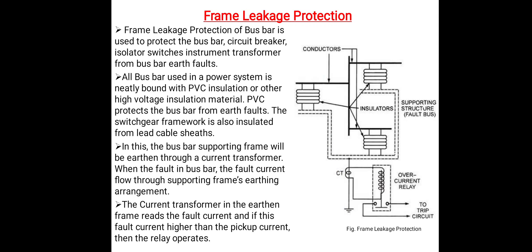In the figure of frame leakage protection, the metal supporting structure or fault bus is grounded through a current transformer, and the secondary of the current transformer is connected with the overcurrent relay. Under normal working condition, the relay remains inoperative. But a fault involving a connection between a conductor and the grounded supporting structure will result in current flow to ground through the fault bus, causing the relay to operate. The fault current flows through the current transformer to the grounded path, and when current flows through the secondary of the CT, it also flows through the overcurrent relay. When current flows through the relay, the contacts close and send information to the circuit breaker, which trips the circuits and isolates the healthy section from the faulty section.